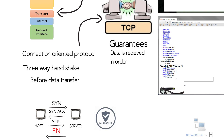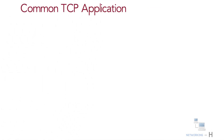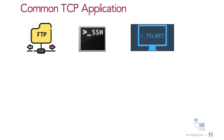Another important thing to remember about TCP is that it guarantees the delivery of data. If a data packet goes astray and doesn't arrive, TCP will resend it. Some common applications that use TCP include FTP, SSH, Telnet, SMTP, and HTTPS.